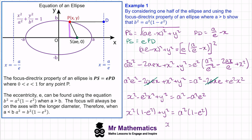We get x squared over a squared plus y squared over a squared(1 minus e squared) equals 1. So we have a squared under the x squared term and this gives us our b squared term, which is what we were asked to show.